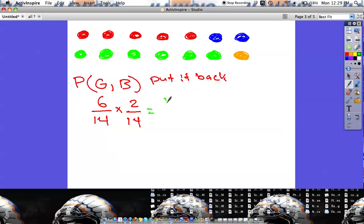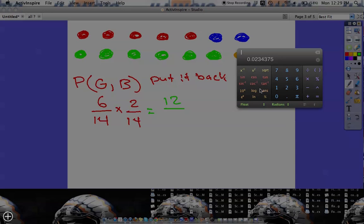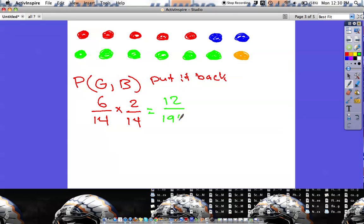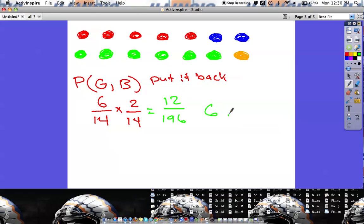So now if I do my multiplication, the top number is twelve. The bottom number is whatever fourteen times fourteen is, or fourteen squared, which is 196. And if I do twelve out of 196, I'm going to get .06, which is actually six percent.